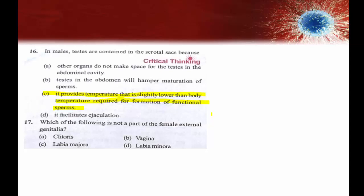The right answer is option C: the scrotum provides a temperature slightly lower than the body temperature, which is required for the formation of functional sperms. For female external genitalia, clitoris, labia majora, and labia minora are all parts of female external genitalia. The right answer is option B.